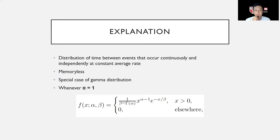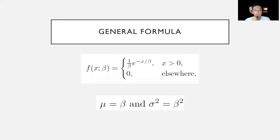Exponential distribution is part of the gamma distribution — it is a special case whenever alpha in the gamma distribution is equal to 1. The general formula of the exponential distribution is: whenever x is greater than 0, f(x) equals 1 over beta times e to the power of negative x divided by beta; or whenever x is less than 0, f(x) equals 0. Beta represents the mean of x, or the variance of x divided by 2.